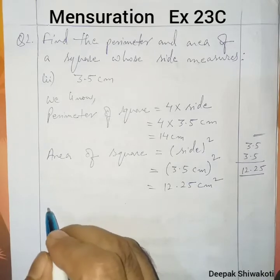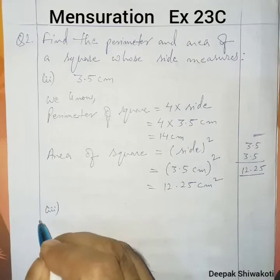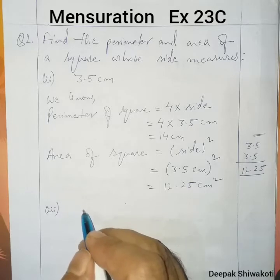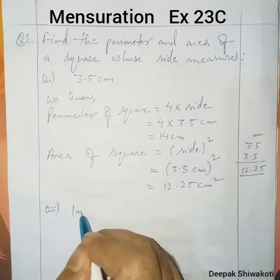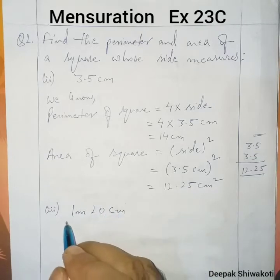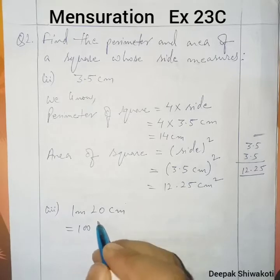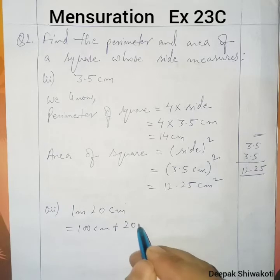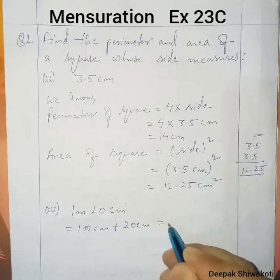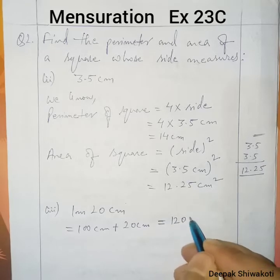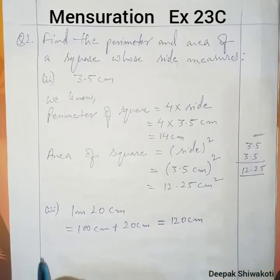Number 3: side is given as 1 meter 20 centimeter. We have to convert it into centimeter. 1 meter equals 100 centimeter, plus 20 centimeter, so it will be equal to 120 centimeter.